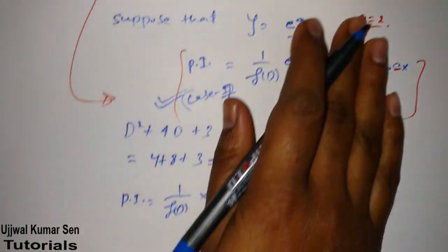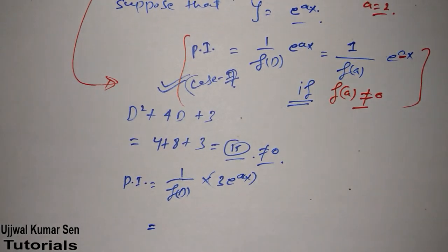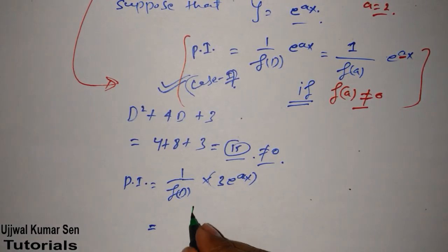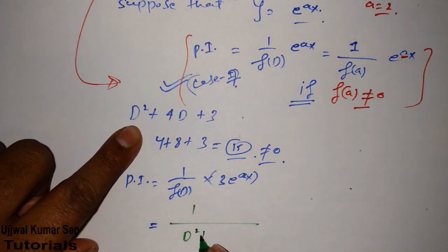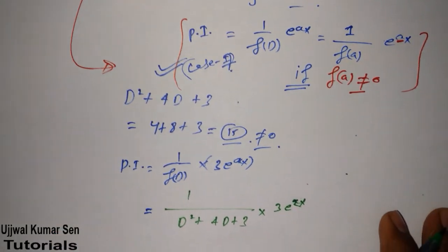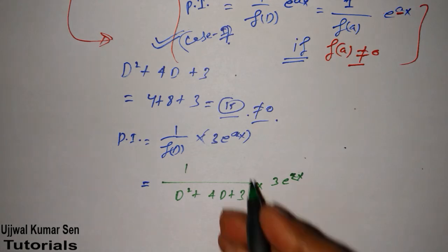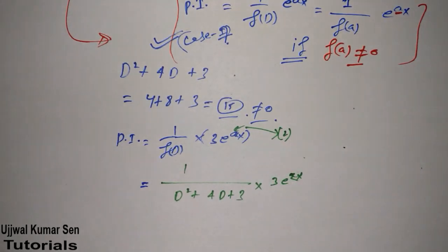So what we can write: basically particular integral is equal to 1 by f(D) multiple 3 e to the power x. What values we have given? We have to write that value here. Now what is f(D)? That is 1 by f(D) is equal to D square plus 4D plus 3, times 3 e to the power 2x.